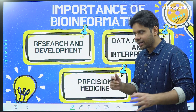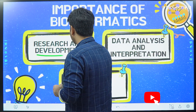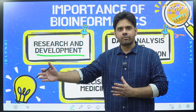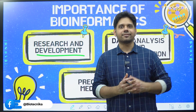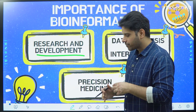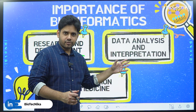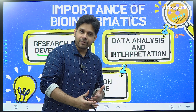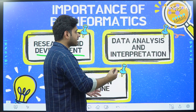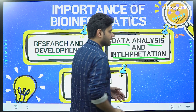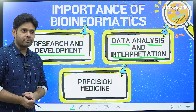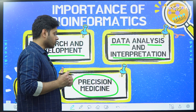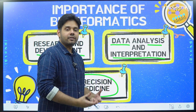Bioinformatics can be used in almost every setting of biotechnology. Broadly, it is used in research and development: the scientist works in the wet lab, gets the data, passes it to the bioinformatician for analysis, and gets the insights back. Beyond R&D, existing datasets can also be analyzed in multiple ways by filtering with different criteria, algorithms, and logic — that is data analysis and interpretation. Then there is precision medicine, which is a very important destination of the drug discovery process.